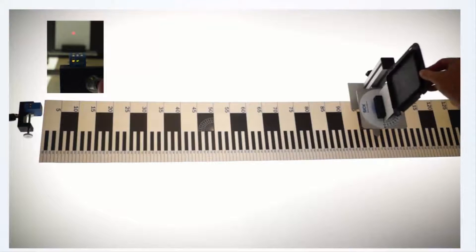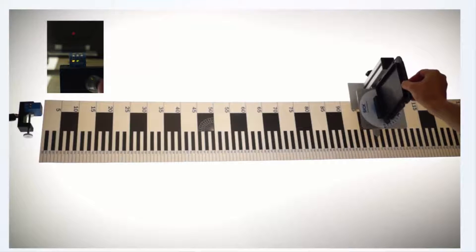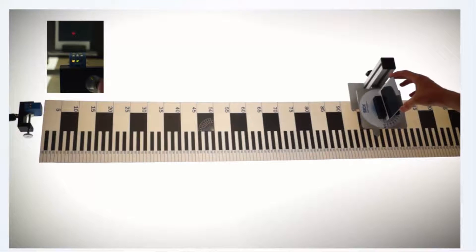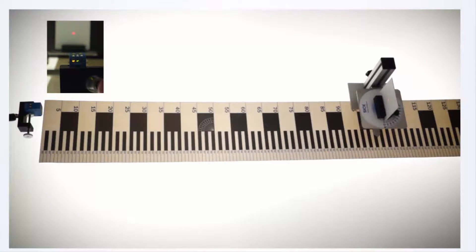Also other surfaces can be detected reliably, like this dark and shiny black cover, a coated metal part or this shiny aluminum.